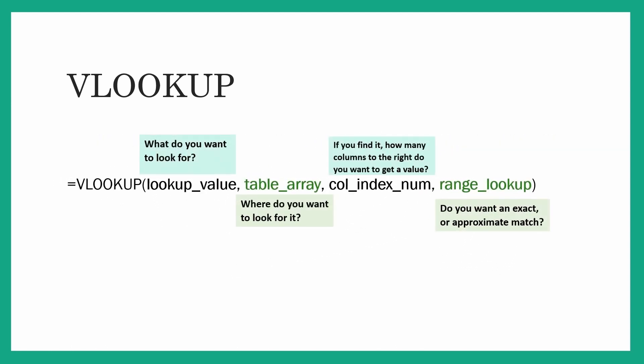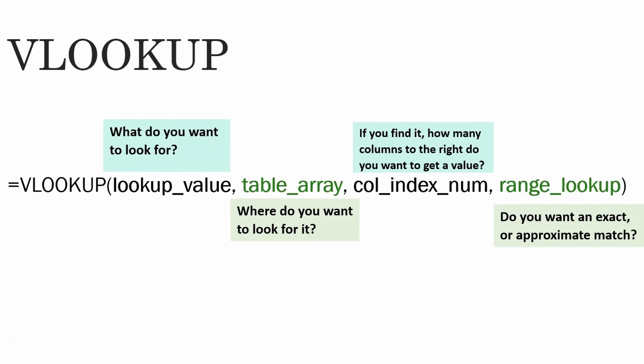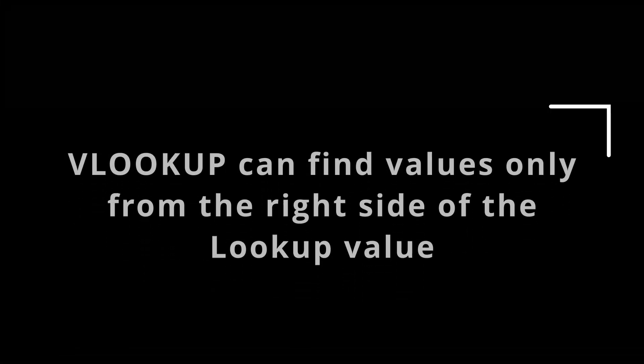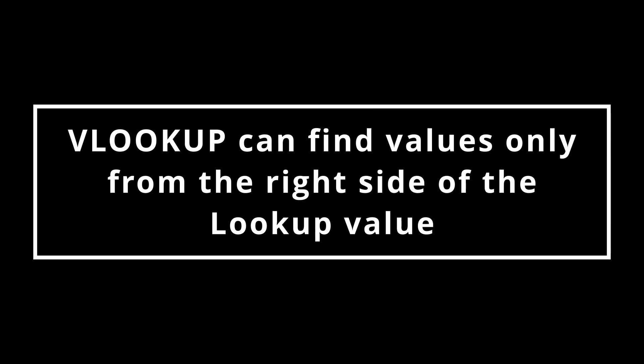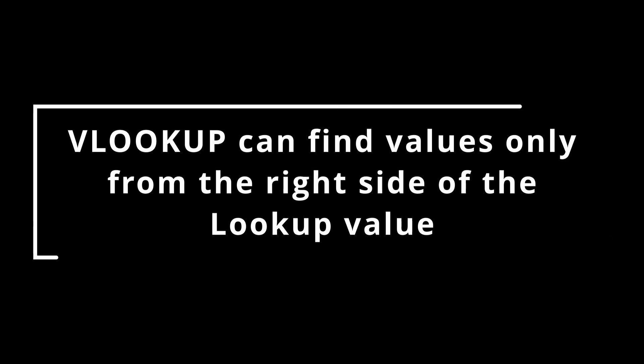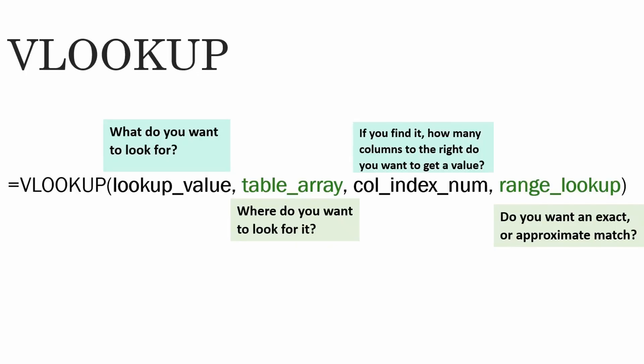Let's deep dive further. Your lookup value is the value you want to look for. The table array is where you want to look for it. The column index number is how many columns to the right you want to get the value from. One limitation of the VLOOKUP formula is it can only find values to the right side of the lookup value — if the value is on the left side, it won't be able to find it. Then range lookup determines whether you want an exact or approximate match.